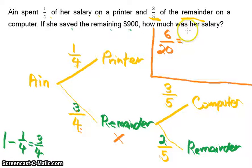From here we can see that the numerator is the number of units which signifies how much she saved—nine hundred dollars—and ten units, this is the total amount of her salary. So let's look at it in this way.